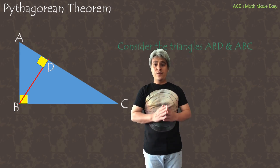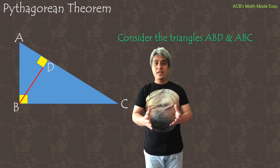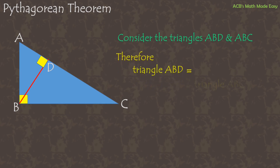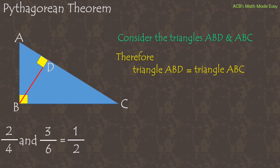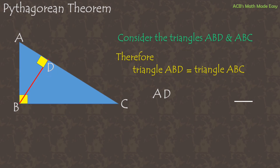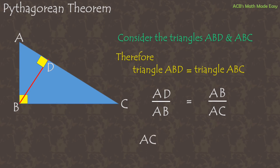We will consider first the triangles ABD and ABC. By the similarity theory, triangle ABD is similar to triangle ABC — just like 2/4 and 3/6, they are both one half. So AD over AB equals AB over AC. Cross-multiplying gives us: AC times AD equals AB squared. This will be equation 1.